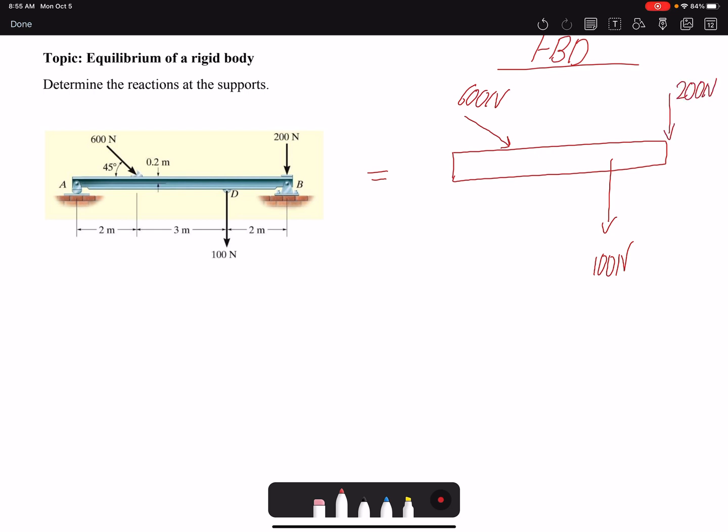These are the given loads. I have two supports here. A is a rocker, so you should be able to identify different supports based on their geometry. I know I only have reaction forces in the y direction because it's free to move in x. B is pinned, so that means I have both reaction forces in y and x.